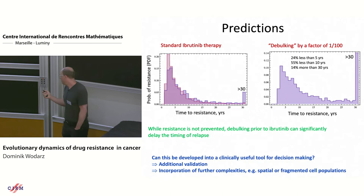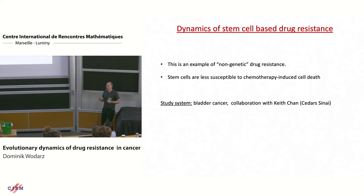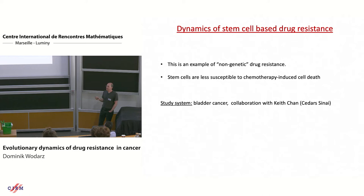Now I want to switch topics and look at stem cell-based resistance. This leukemia discussion covered what I consider standard resistance: you get a mutation, those mutants are resistant, they grow out. But there's also an example of resistance where you don't find mutants that are intrinsically resistant to the therapy. This can be mediated by stem cells, because stem cells are less susceptible to treatment and less susceptible to cell death. We study this in the context of bladder cancer with collaborator Keith Tan at Cedars.